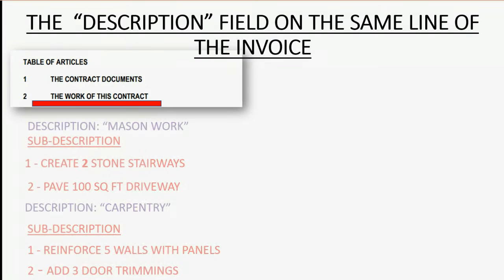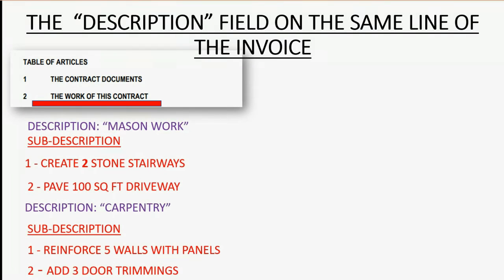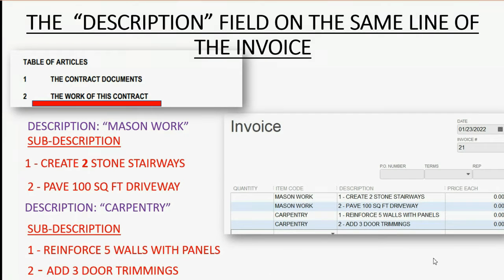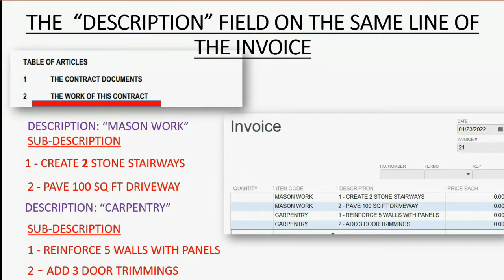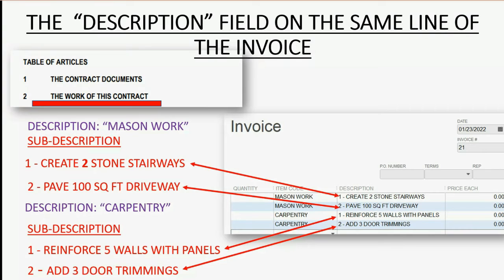The main description is the name of the billed item in the item column of the invoice, but it's the sub-description that you use to decide how much of the work is done. The sub-description goes in the description field on the same line of the invoice as the name of the item. For example, if the work on this contract called for two items — mason work and carpentry — the title 'mason work' would go in the item code or item name column, and the sub-description from the contract would go in the description field of the invoice, so you can clearly see exactly what the contractor is supposed to do in order to bill the client for that item of work.